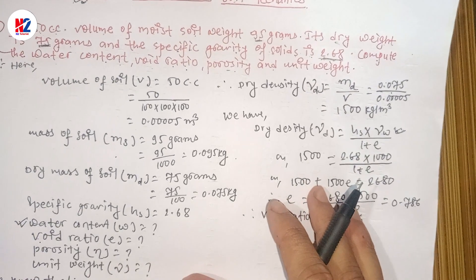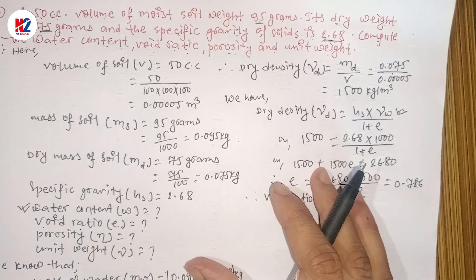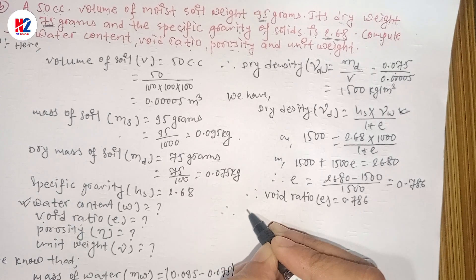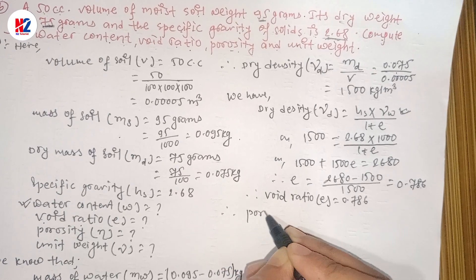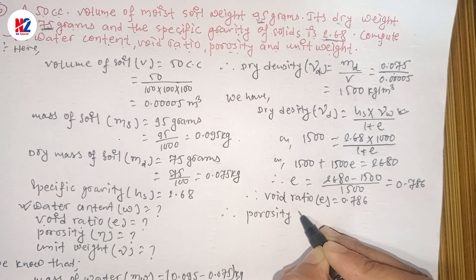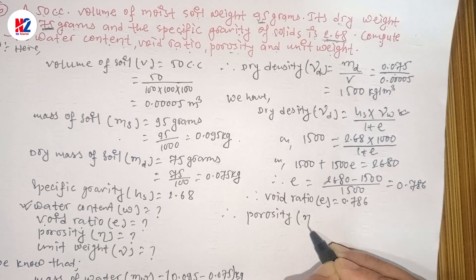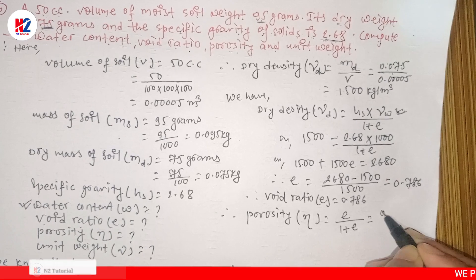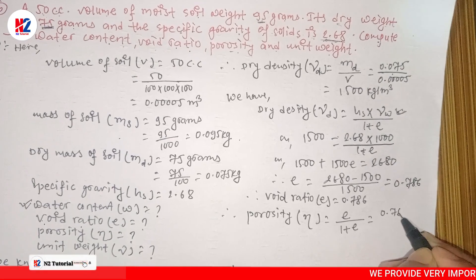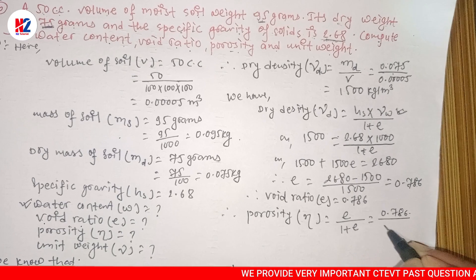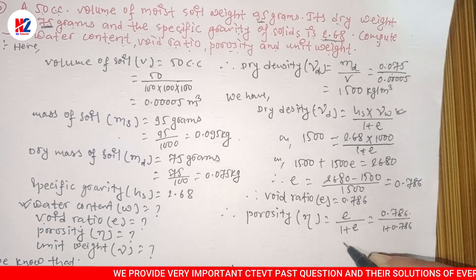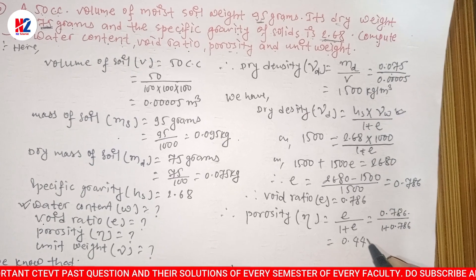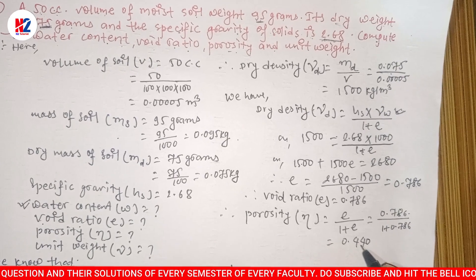Now finding porosity: porosity formula n = e divided by (1 + e). Substituting e = 0.786: n = 0.786 divided by (1 + 0.786) = 0.786 divided by 1.786.